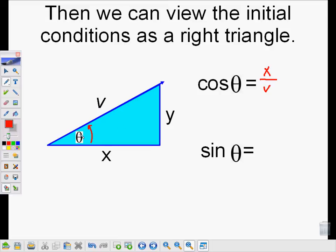Sine of the angle can be looked at as the opposite over the hypotenuse, or y over v. So now we've related this angle and the magnitude to each side of the right triangle.